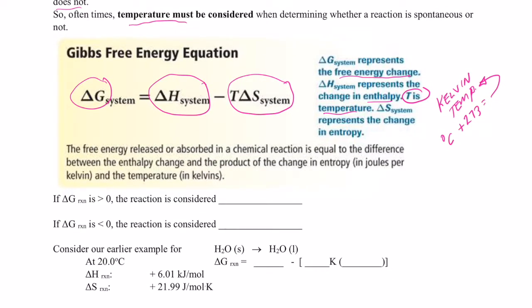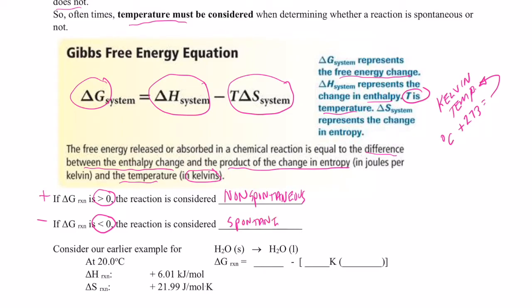The free energy released or absorbed in a chemical reaction equals the difference between the enthalpy change and the product of the entropy change and the temperature in Kelvin. If delta G is greater than zero (positive sign), the reaction is non-spontaneous — we have to add energy for the reaction to continue. If delta G is less than zero (negative sign), the reaction is spontaneous — there's enough energy for the reaction to continue on its own.